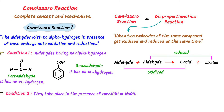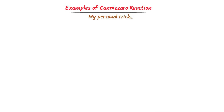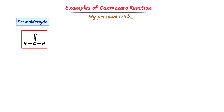This reaction is called a disproportionation reaction because one molecule of aldehyde is oxidized and another is reduced. Let's note down this very important point. Now let me teach you the examples of Cannizzaro reactions. I will teach you my personal trick to solve any Cannizzaro reaction in less than a minute. Consider formaldehyde — we know that it has no alpha hydrogen, so it follows Cannizzaro reaction.